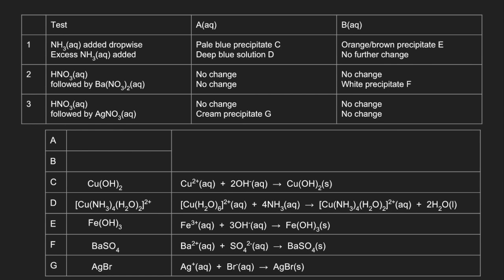So we've established that A contains copper 2 plus ions and bromide ions and so therefore A is copper 2 bromide. And B contains iron 3 plus ions and sulphate ions, so it's iron 3 sulphate.